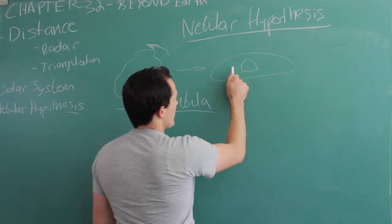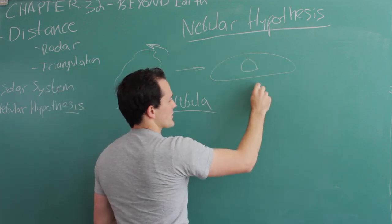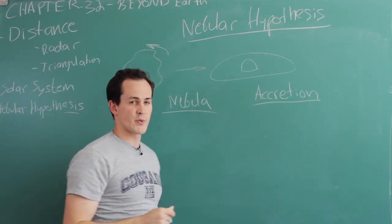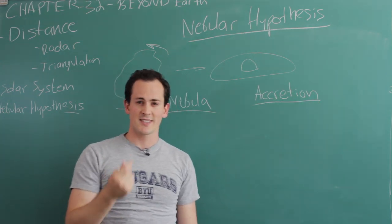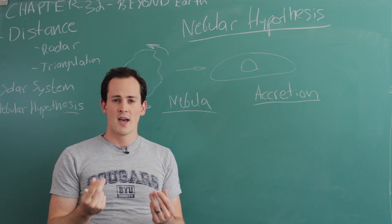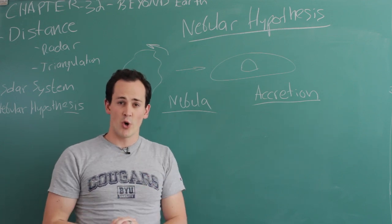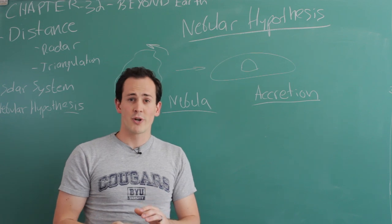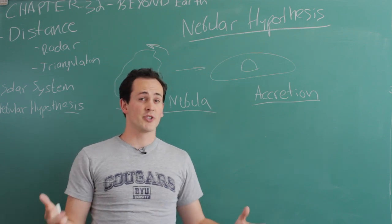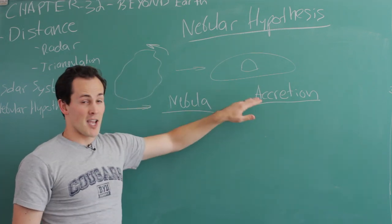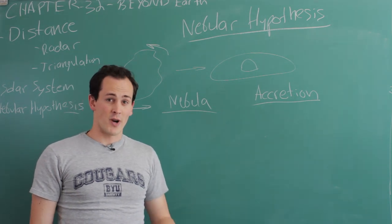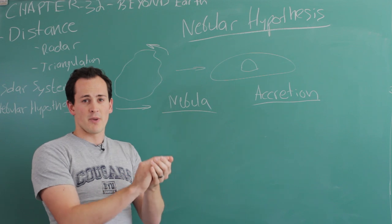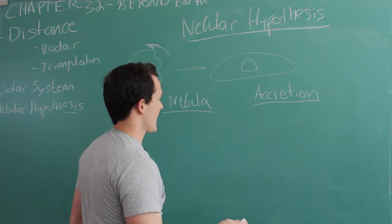Here in this disk, you have this process called accretion. Accretion is where you have small particulates like sand and fine dust that begins to build together like a snowball. You take a snowball, you put more snow on it, it becomes a larger snowball. You can roll it around on the ground and build a snowman. This is the exact same way that the planets and the sun were able to form. The pieces of material began to accrete together until they became the planets and the asteroids.